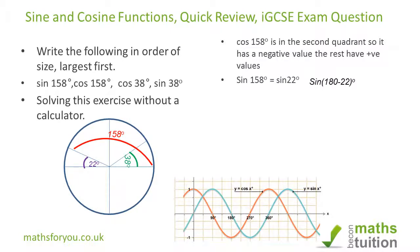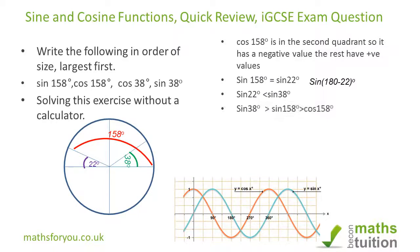Looking at the sine curve, as x values increase from 0 to 90 degrees, the sine values also increase. That means sin 38° is greater than sin 32° — wait, sin 22° — and by implication sin 38° is greater than sin 158°. So we now have: sin 38° > sin 158° > cos 108 degrees.